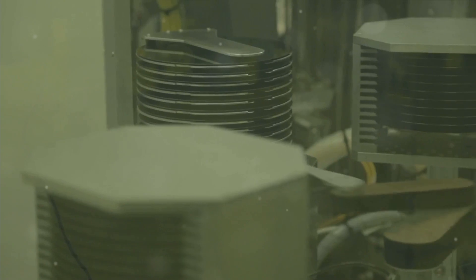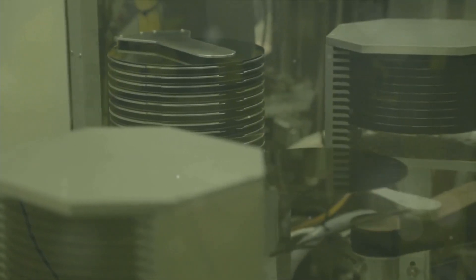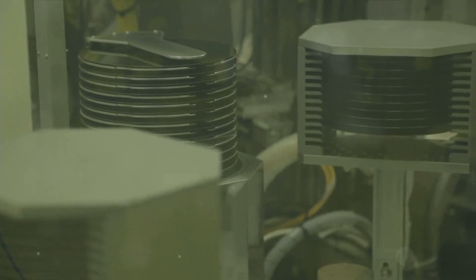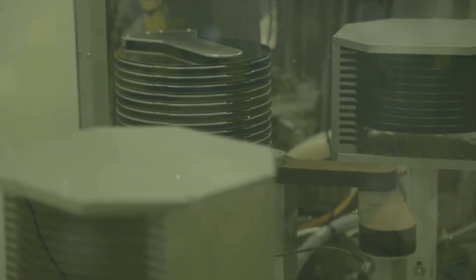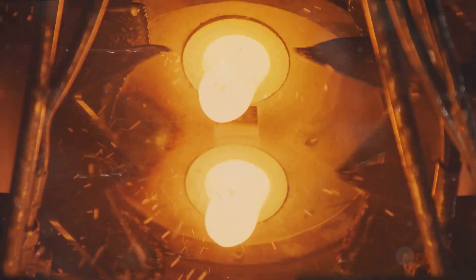Picture a crucible filled with molten silicon. Into this fiery bath, a single crystal seed of silicon is carefully dipped. This seed acts as a template, encouraging the molten silicon to arrange itself into a matching crystalline structure. As the seed is slowly withdrawn, it pulls with it a growing, cylindrical crystal of silicon. This is our ingot. The process is a delicate dance. The seed must be withdrawn at just the right speed. Too fast and the crystal structure won't have time to form properly. Too slow and the ingot could become too large to handle. It's a balancing act that requires precision and patience.